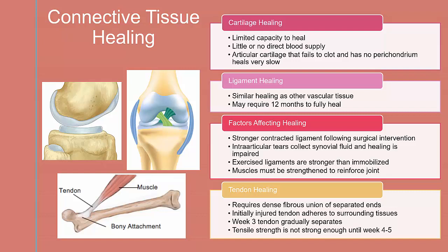Finally, tendon healing. The initial bleeding followed by proliferation of ground substances and fibroblasts occurs. Myoblastic cells form, which result in the regeneration of new myofibrils. Collagen will mature and orient along the lines of tensile forces. Healing could take 6–8 weeks depending upon the muscle injured.